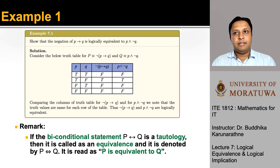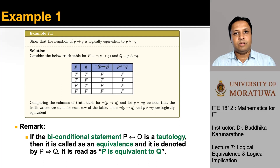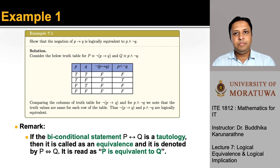There is a special remark: if the biconditional statement P if and only if Q is a tautology — where a tautology is when the truth value is always true — then it is called an equivalence, and it is denoted by the two-headed arrow notation. It is read as P is equivalent to Q, where P and Q are two statements.